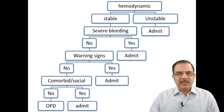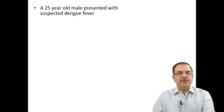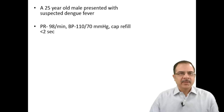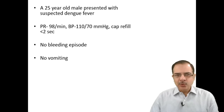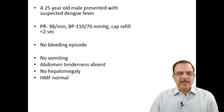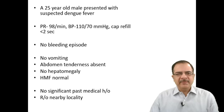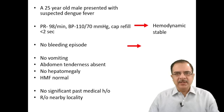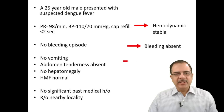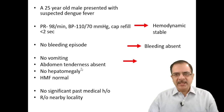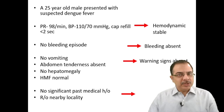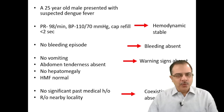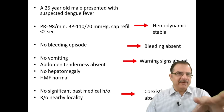Case 1: A 25-year-old male with suspected dengue fever. Pulse 78, BP 110/70, capillary refill time less than 2 seconds, no bleeding, no vomiting, no tenderness, no hepatomegaly, normal higher mental functions, no significant past medical history, lives in a nearby locality. Assessment: hemodynamically stable, no bleeding, no warning signs, no coexisting conditions or social issues. This is Group A — OPD treatment.